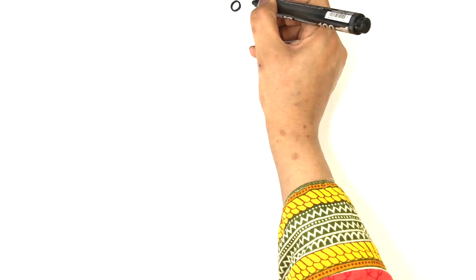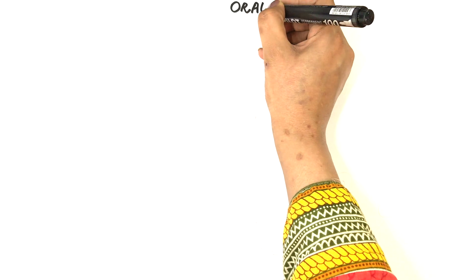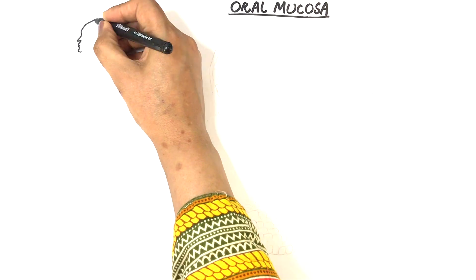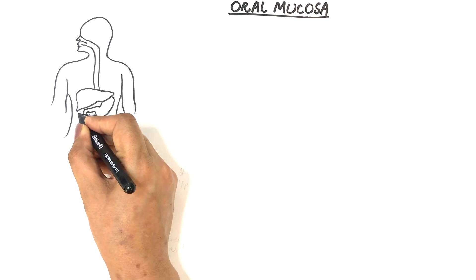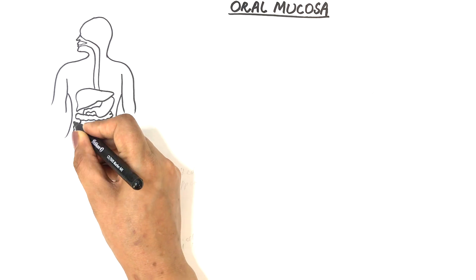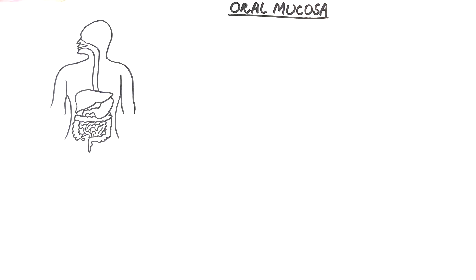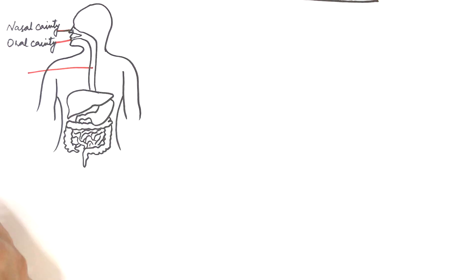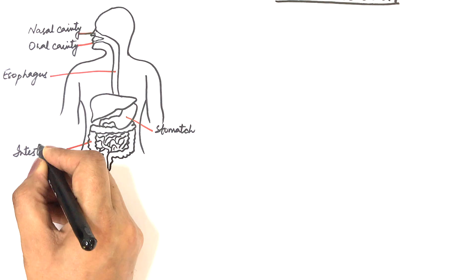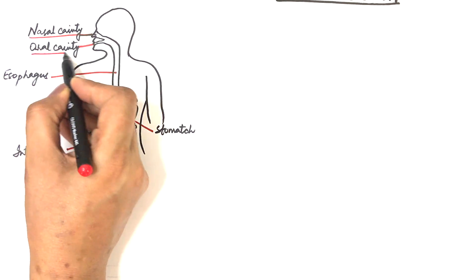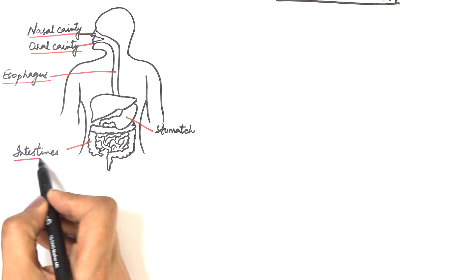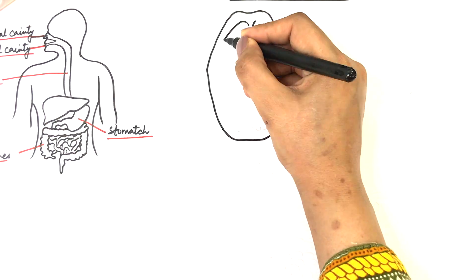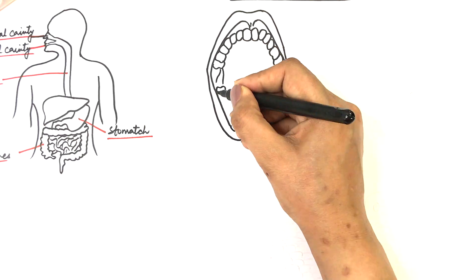Hello, and in today's video we are going to look at oral mucosa. The term mucous membrane refers to the moist lining of the gastrointestinal tract or the GIT. It lines the oral and nasal cavities to the esophagus, the stomach and the intestines. This mucous membrane in the oral cavity is termed oral mucosa.